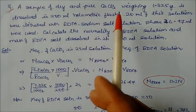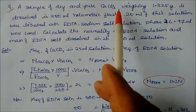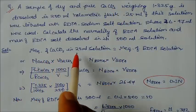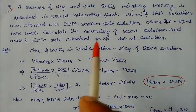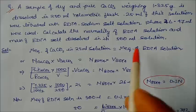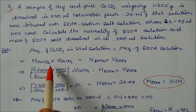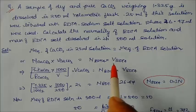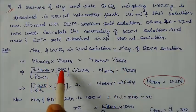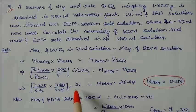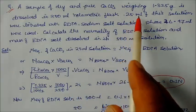The milliequivalents of calcium carbonate are equal to the milliequivalents of EDTA solution. Milliequivalents of calcium carbonate in the 25 ml aliquot equals N₁ of EDTA multiplied by the volume of EDTA. The weight is given, and 250 ml total volume is given, but we are working with the 25 ml aliquot.